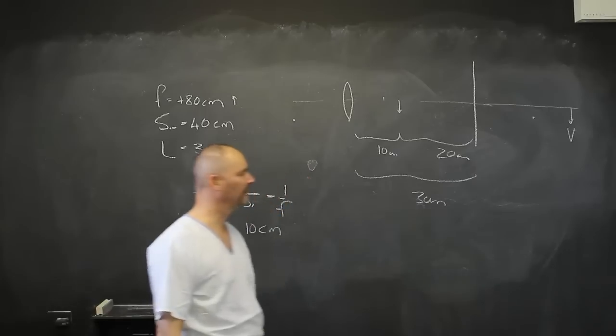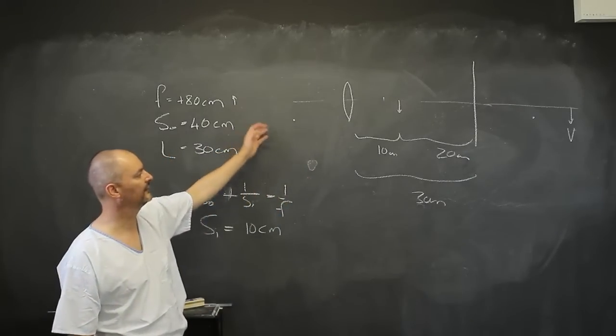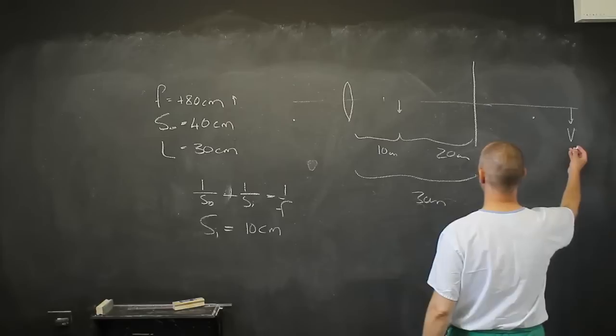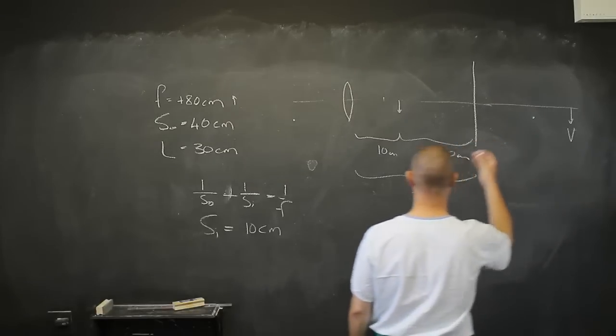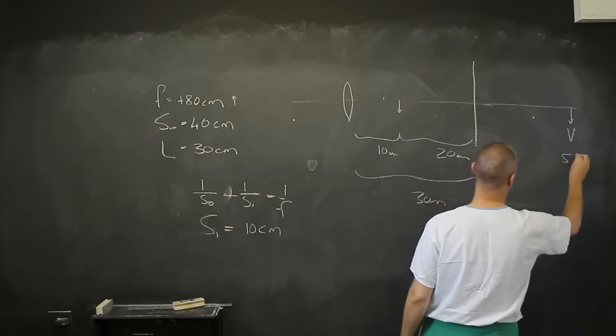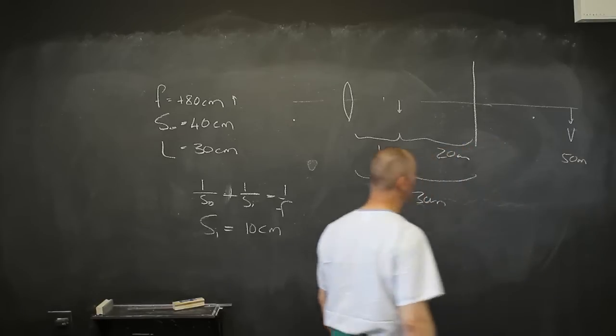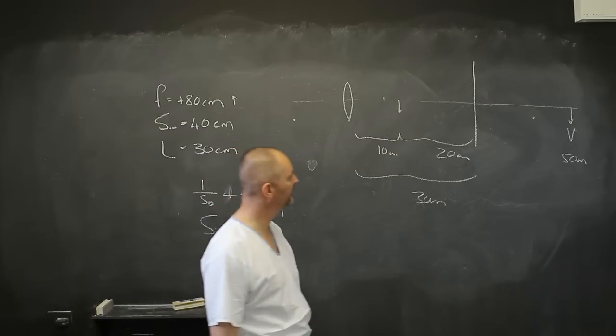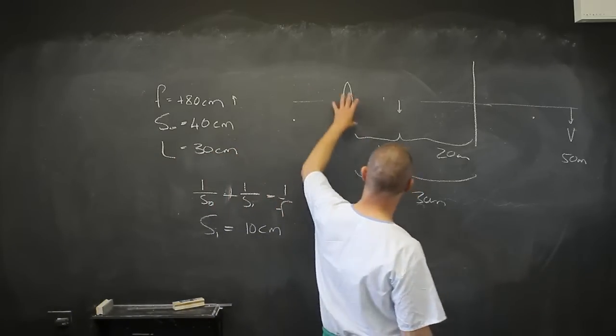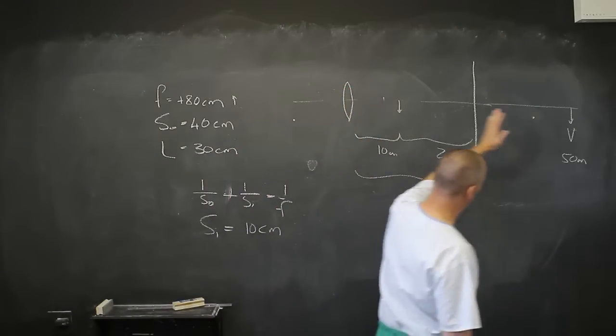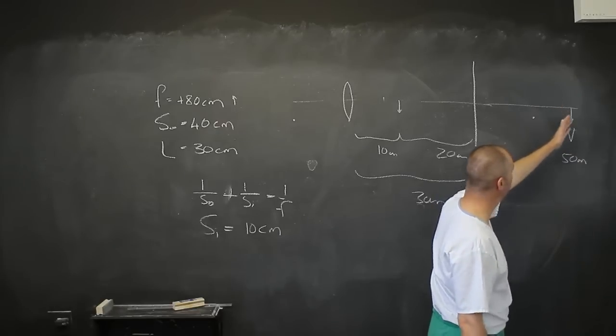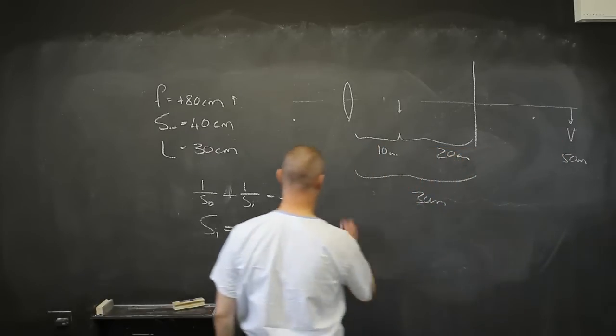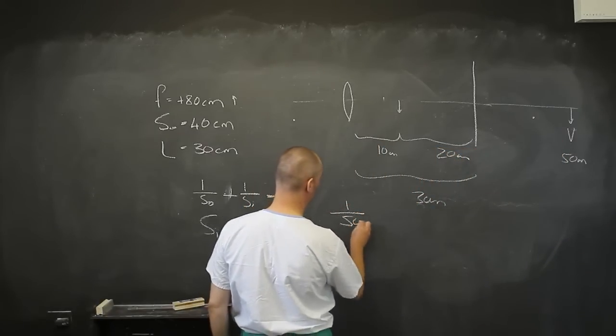Now don't get confused because we have always placed the object on the left hand side. This is now not going to be an S0 of—this is 20, this is 30, so I am talking, this is at 50 centimeters. But that is not a negative 50 centimeters. Just flip the thing over in your mind. The lens is going to see this as a real object with an S0 of 50 centimeters.